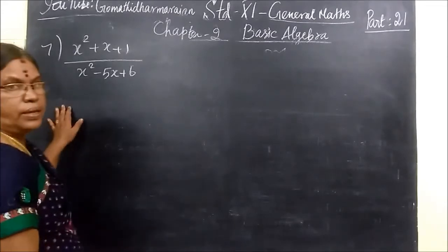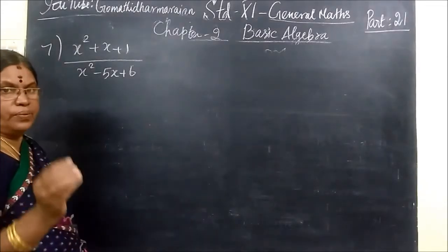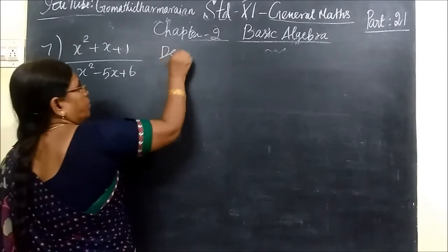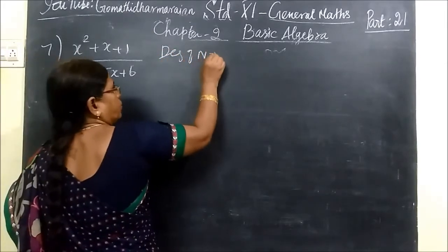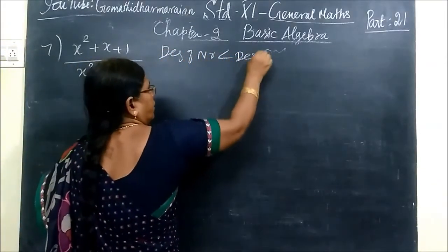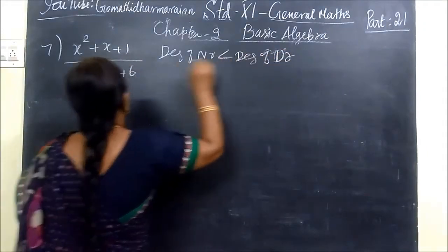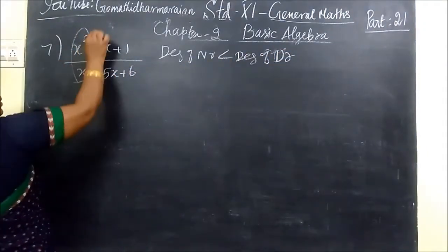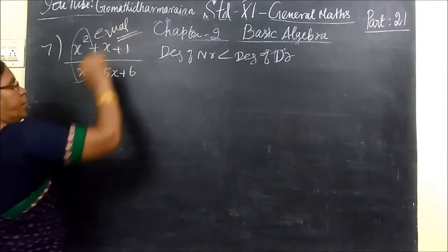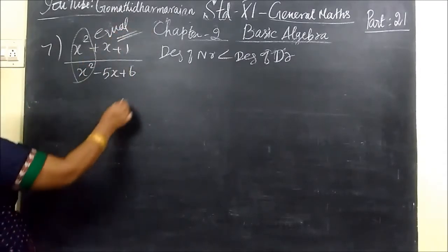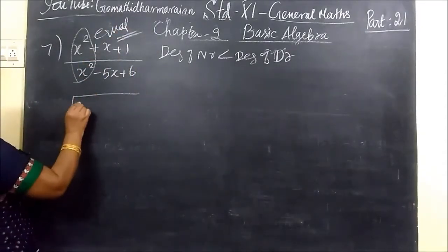So now we will see the seventh question. Here first of all we should see degree of numerator should be less than degree of denominator, but yours is equal. In the class equal. But not equal. So that you are dividing.